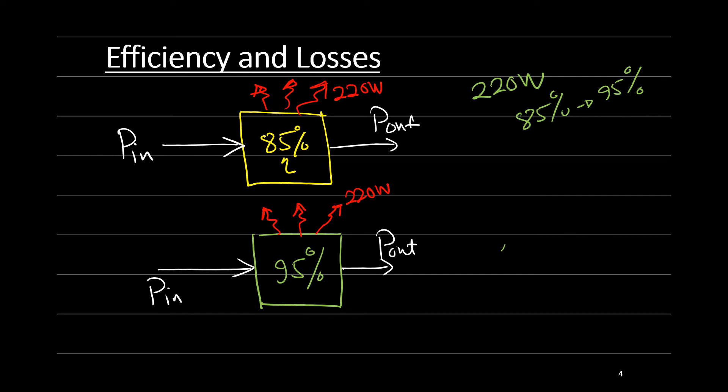If we try to calculate the power for the first converter, you will find that the output power is equal to 0.85 the efficiency over 1 minus 0.85 times the losses, which are 220 watt. Calculate this, you will get 1.246 kilowatt. So this is the output power that you can get from the first converter.